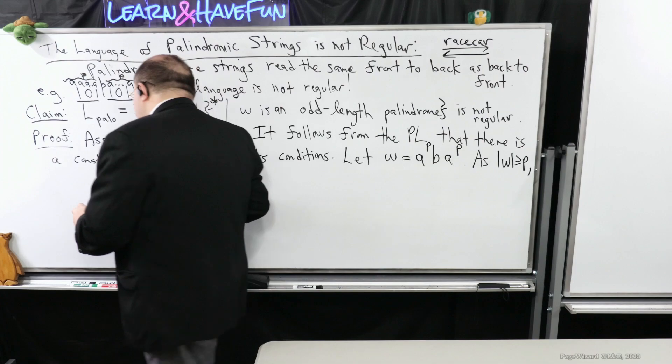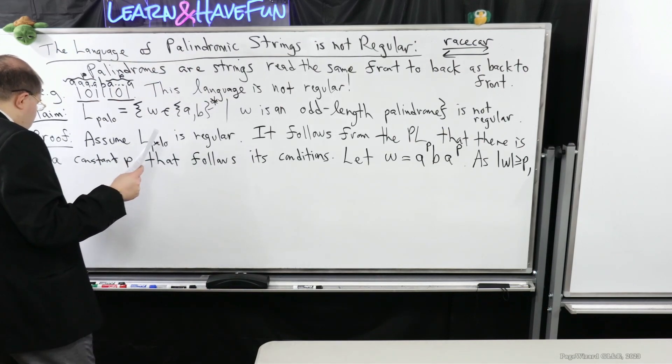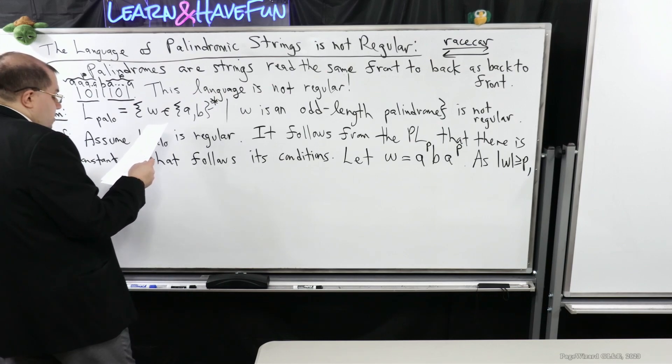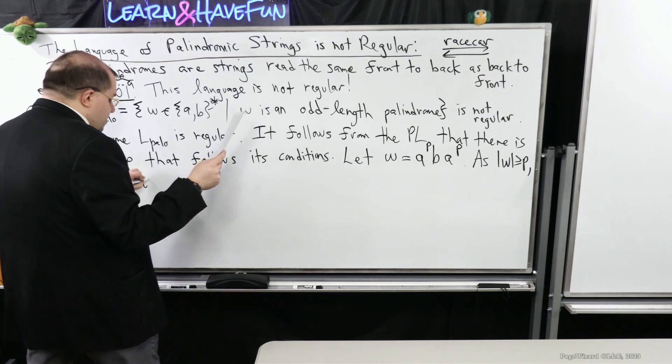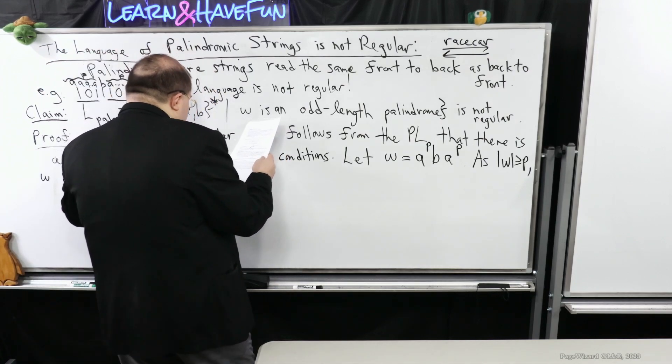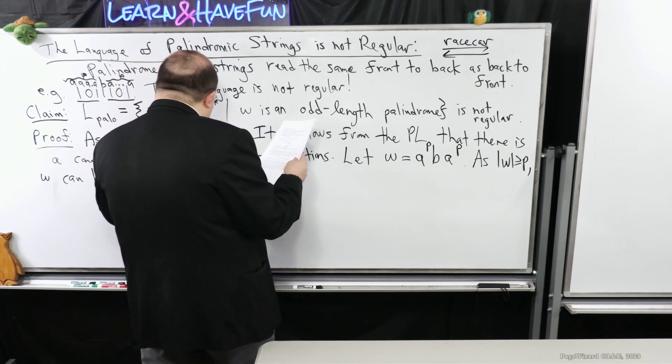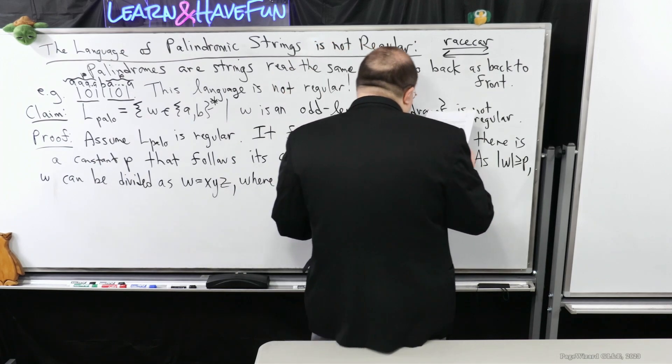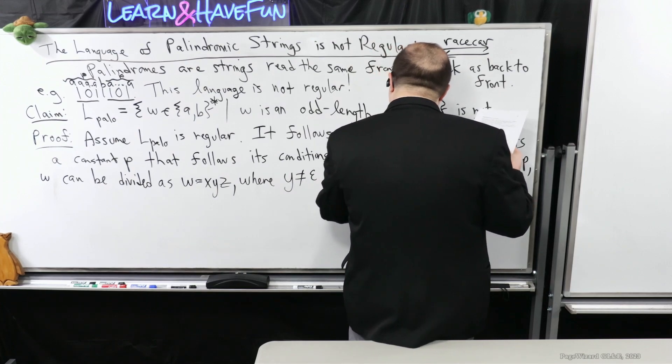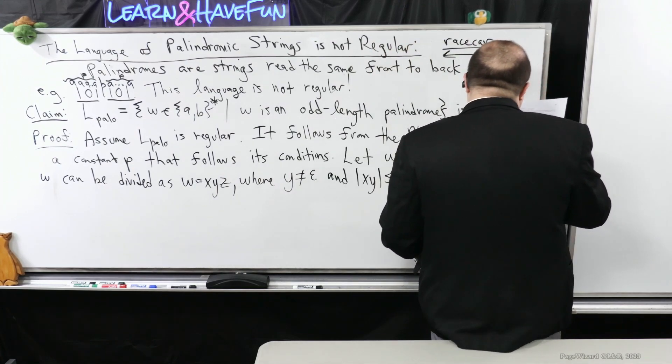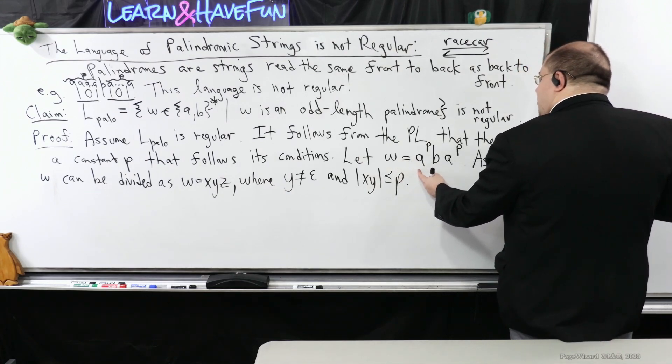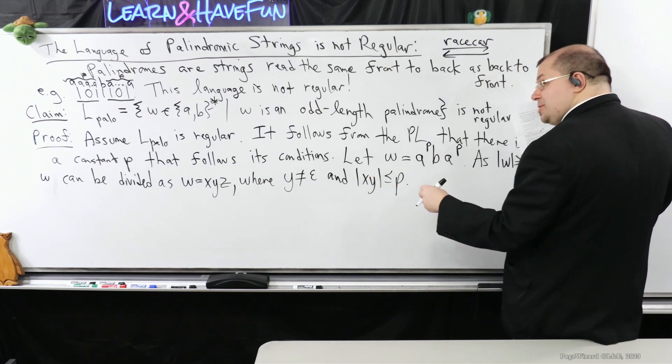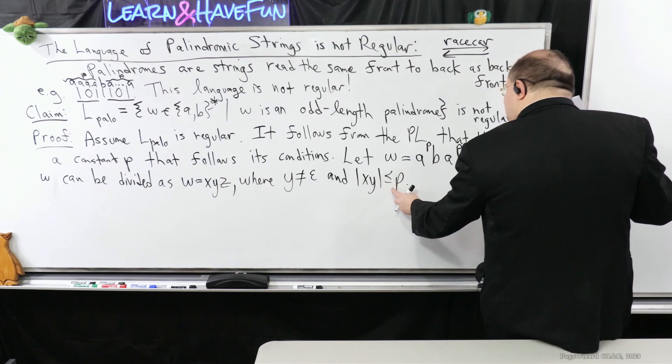As the length of W is at least the pumping length, W can be divided as W equals X, Y, Z into the three parts where the Y part isn't empty, and the length of X, Y is at most P. So what's going to happen with X, Y? It's going to be at most P.